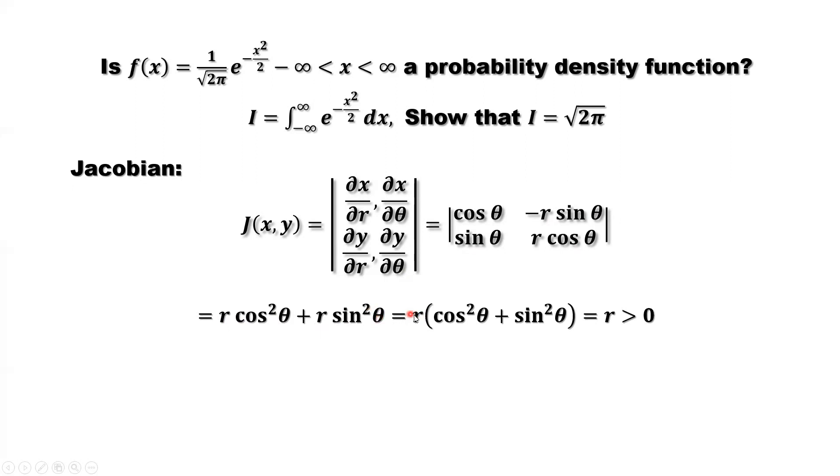Factor the little r outside. The inside part is one. Cosine squared plus sine squared equals one. Equals r. It's bigger than zero.